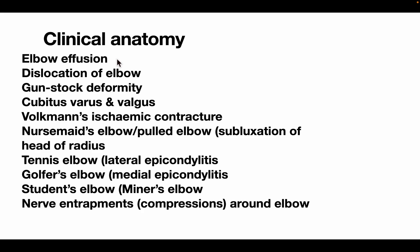Clinical anatomy related to the elbow joint includes: elbow effusion, dislocation of the elbow joint, gunstock deformity, cubitus varus and valgus, Volkmann's ischemic contracture, nursemaid's elbow (also known as pulled elbow or subluxation of the head of the radius), tennis elbow (lateral epicondylitis), golfer's elbow (medial epicondylitis), student's elbow (miner's elbow), and nerve entrapment or compression of nerves around the elbow joint.